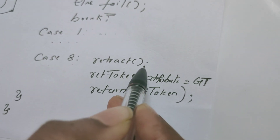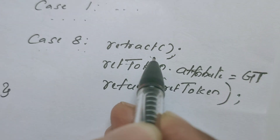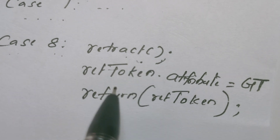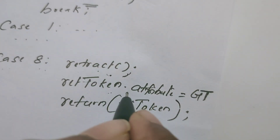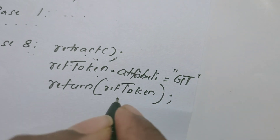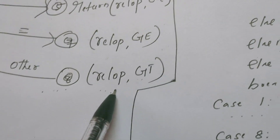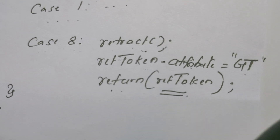First, there is a method called retract invoked. Retract means the input pointer reading the input buffer is retracted one position back. The next line is the written token. The written token's attribute value is set to greater than and the same token is returned. Whatever we showed in the transition diagram is implemented here: when state value is 8, it returns the token with name relational operator and attribute value greater than.